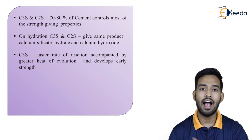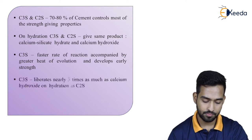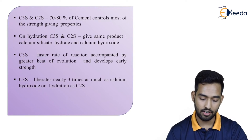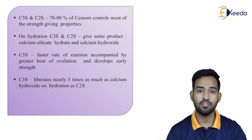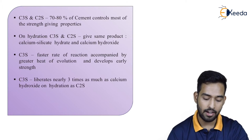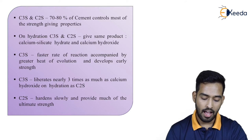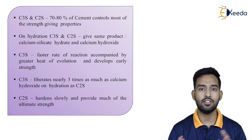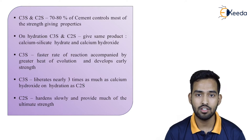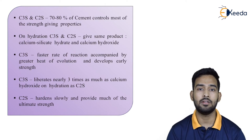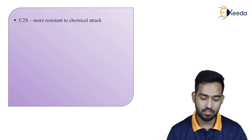C3S will give a higher rate of heat of hydration. C3S liberates nearly 3 times as much calcium hydroxide on hydration as C2S. Whereas C2S hardens slowly and provides much of the ultimate strength. So, C3S gives early strength and C2S is responsible for ultimate long-term strength. C2S is also more resistant to chemical attack.